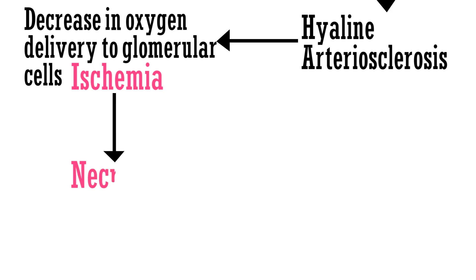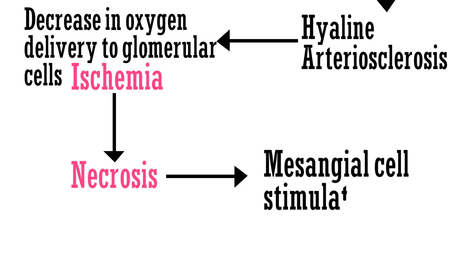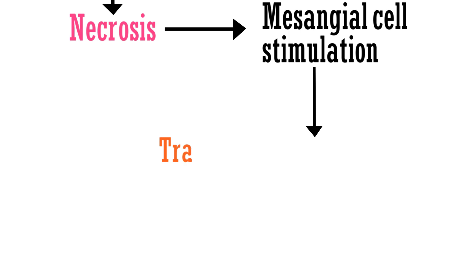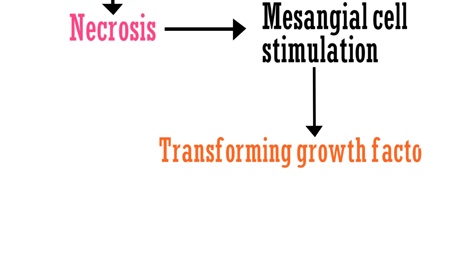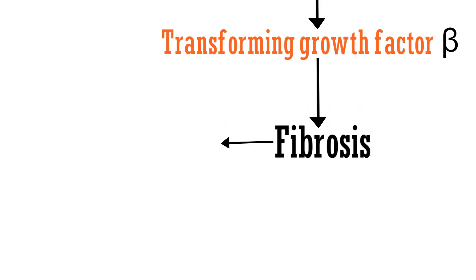Ischemia will result in death of the cells, also called necrosis. When necrosis occurs, it stimulates the mesangial cells. As we discussed earlier, mesangial cells perform various functions, which also includes release of a cytokine called transforming growth factor, abbreviated as TGF-beta. This results in fibrosis, which is called glomerulosclerosis.